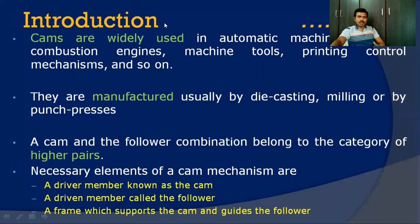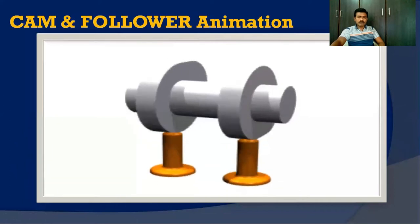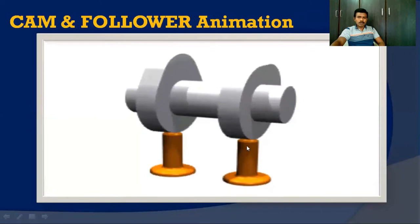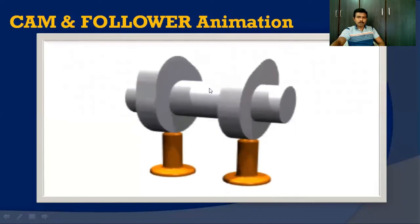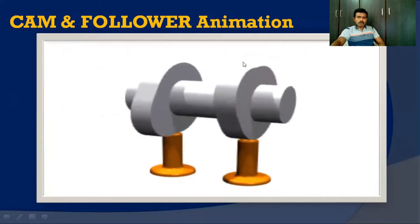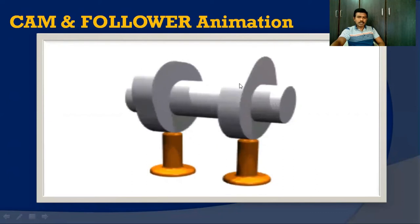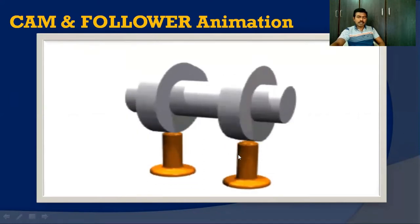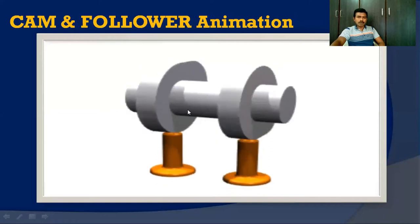These three are the elements of a cam and follower mechanism. Looking at an animated view of the cam and follower mechanism — like the valves of your IC engine — this is a camshaft mounted with two cam profiles. These are the followers, just like valves of an IC engine. Both cams mounted on the camshaft have the same profiles, but the two cams are mounted with different orientations with a certain offset. The rotation of the two cams causes the opening and closing of the follower movements — the valves — at different intervals of time. That's how the opening and closing of IC engine valves is done using a cam and follower mechanism.